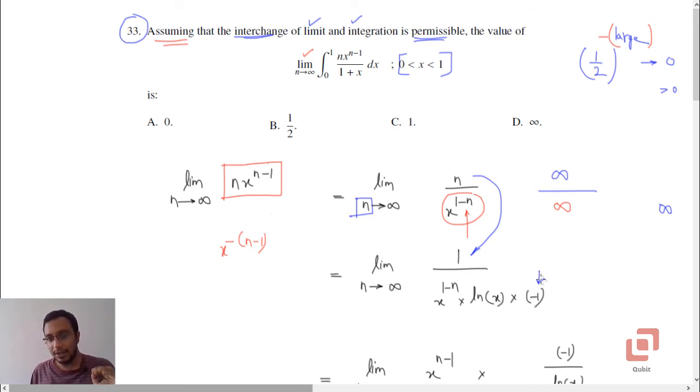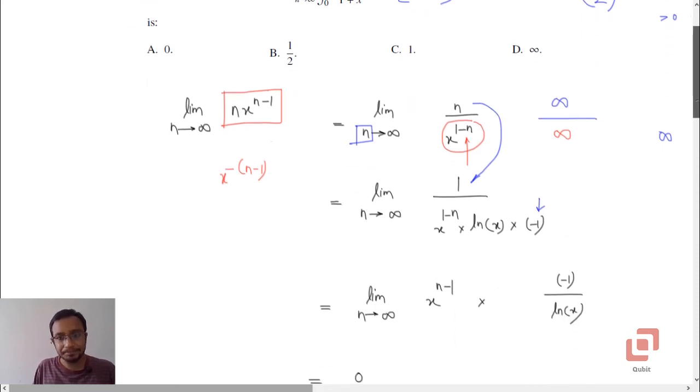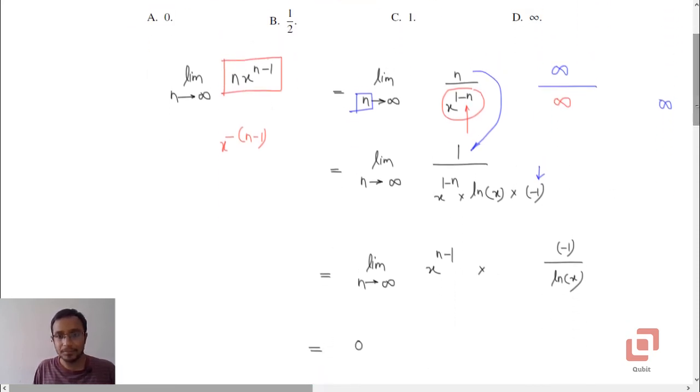Now having simplified this, we can again go back to the numerator. So you can write this x raised to 1 minus n, which is present in the denominator, again in the numerator. And now log x, let it be in the denominator, and minus 1 you can write it anywhere.